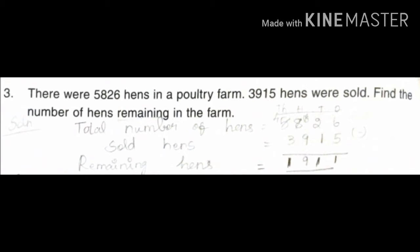After setting up the subtraction: 6 minus 5 equals 1. Then 2 minus 1 equals 1. Next, 8 is smaller than 9, so we borrow from the next place — making it 18. 18 minus 9 equals 9, and then 4 minus 3 equals 1. So the remaining cans equal 1,911.